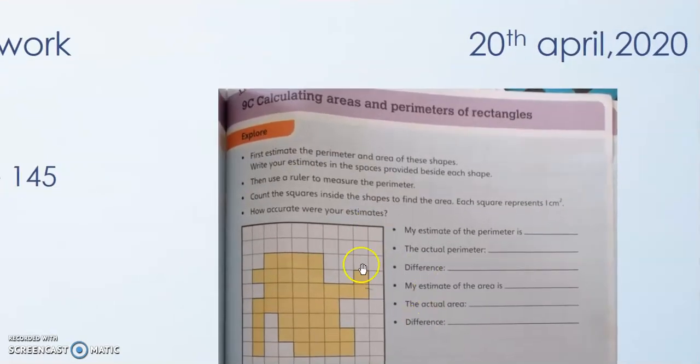So in this page, they said explore. First, estimate the perimeter and area of this shape. Write your estimates in the space provided beside each shape. Then use a ruler to measure the perimeter. Count the squares inside the shape to find the area. Each square represents 1 cm square. How accurate were your estimates?